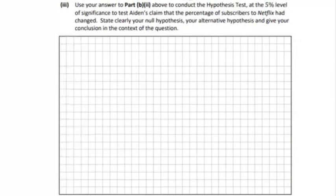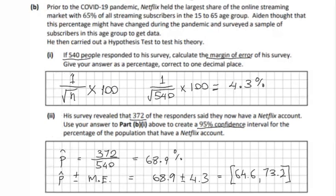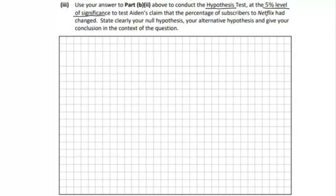Now we need to do the hypothesis test at the 5% level of significance. The 5% level of significance relates to the 95% confidence interval, so we can use this confidence interval for our test. Let's put our test together. The claim is going to be that 65% of the market is between the 15 to 65 age group. The null hypothesis means that there is no change, so H₀: the mean is equal to 65%. The alternative is H₁: the mean is not equal to 65%.